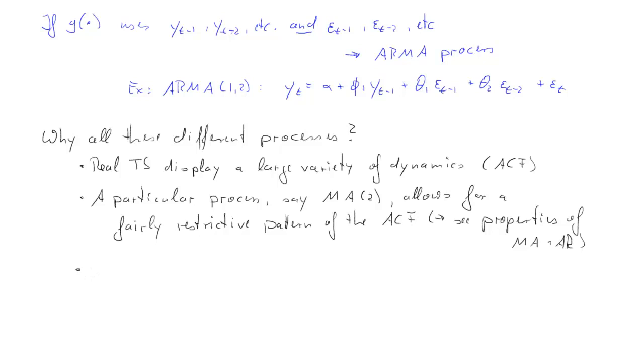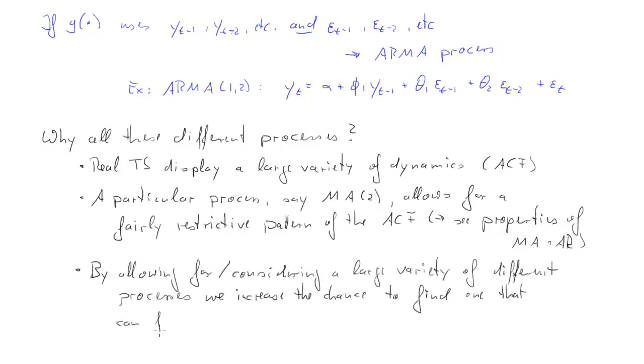So, if we want to be able to capture all sorts of different patterns of autocorrelation functions, then really what we need to do is we need to allow for a range of different type of processes. AR processes, MA processes, they allow for different patterns of autocorrelation functions and combinations of these. And only then can we increase our chance that we can actually fit the autocorrelation function of a real time series.